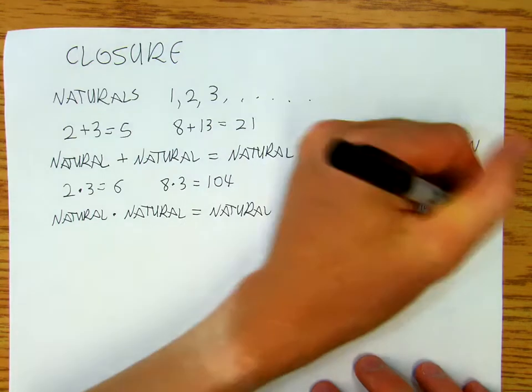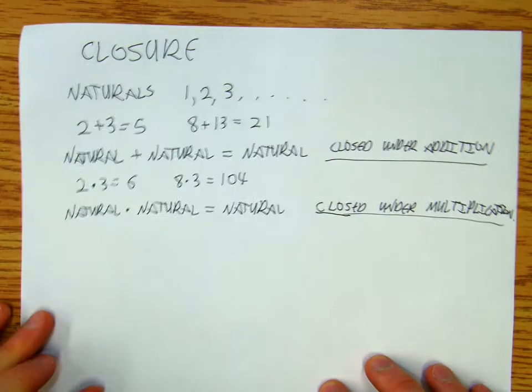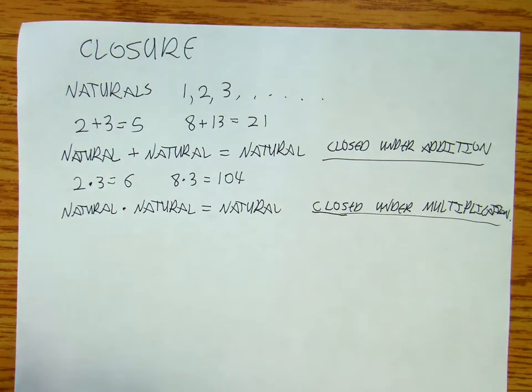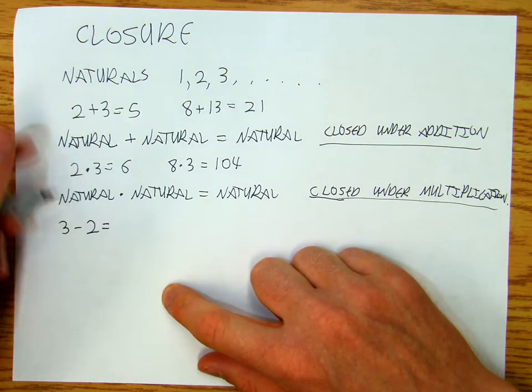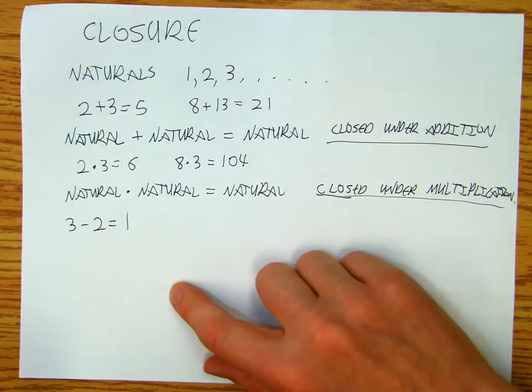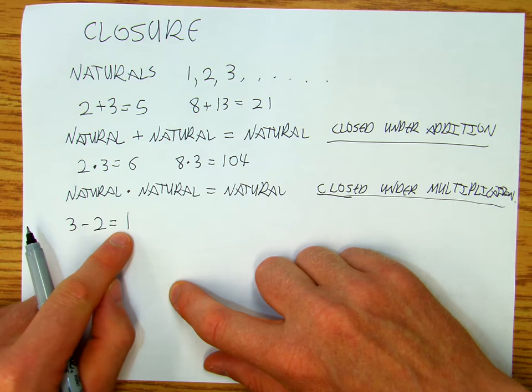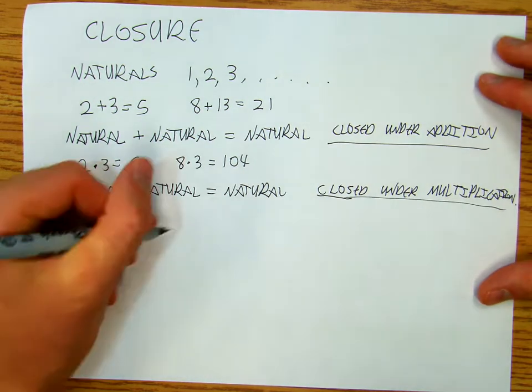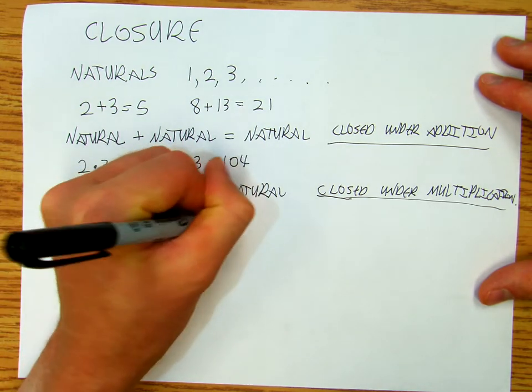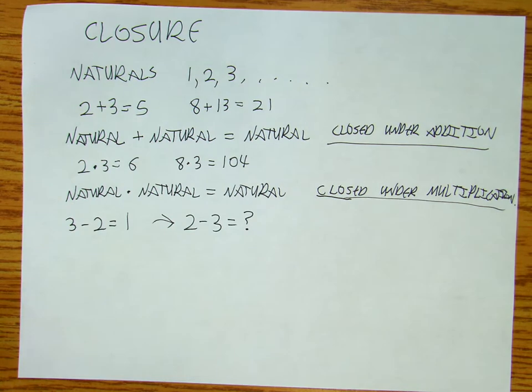What more do we need? We can add and multiply. Well, how about subtract? If we do 3 minus 2 equals 1, that's closed - a natural minus a natural equals 1. But what happens if I do 2 minus 3? If natural numbers are all that I have, if that's all I know about, I can't do this problem.